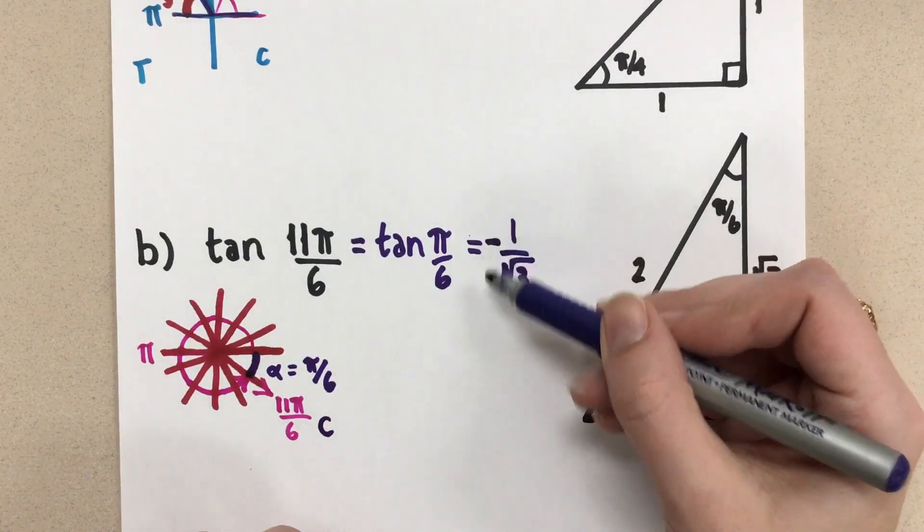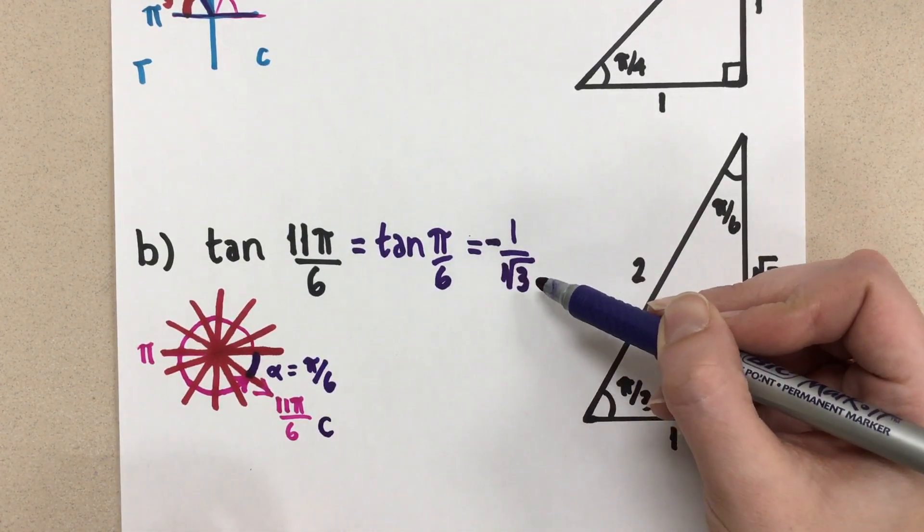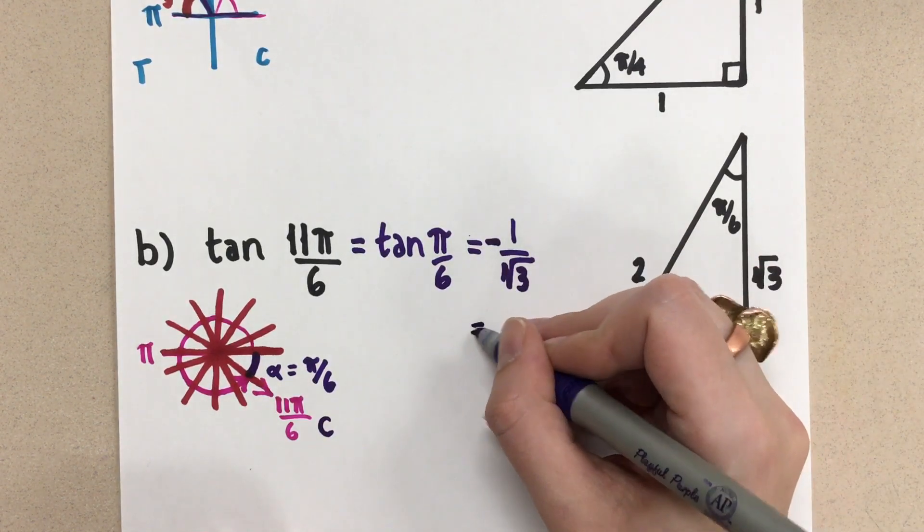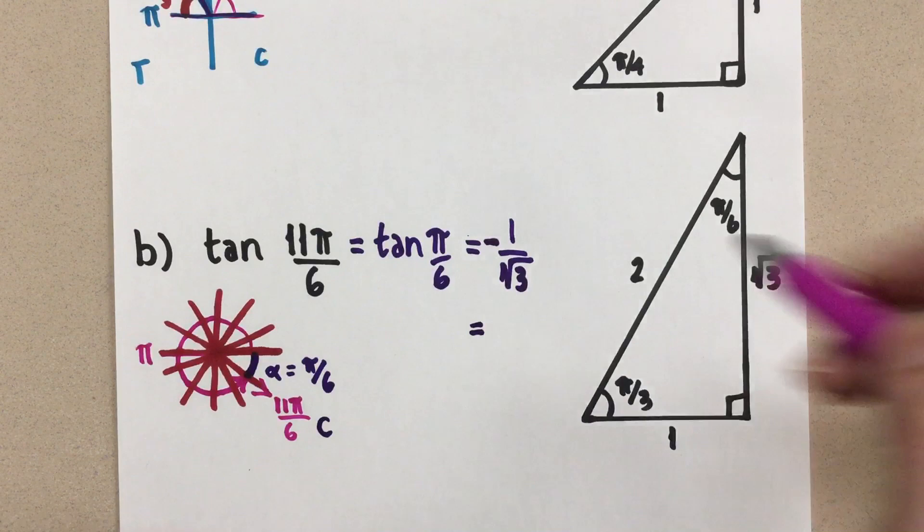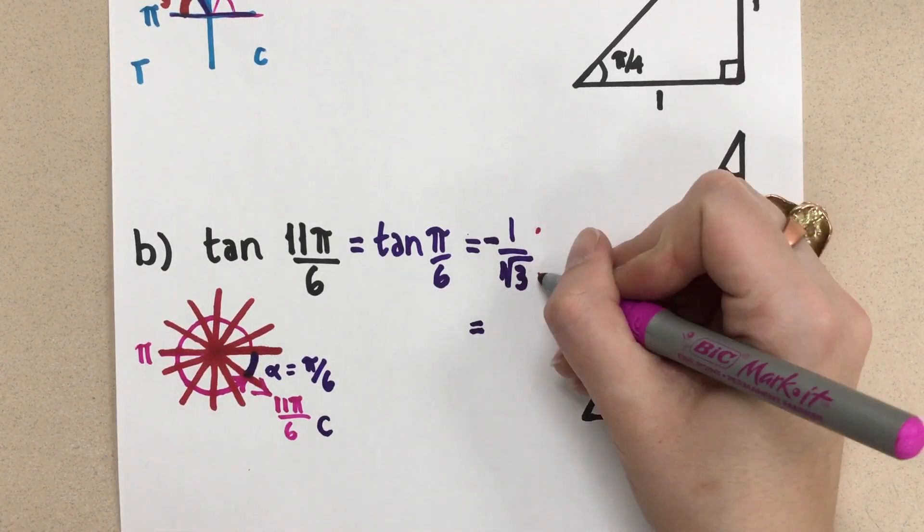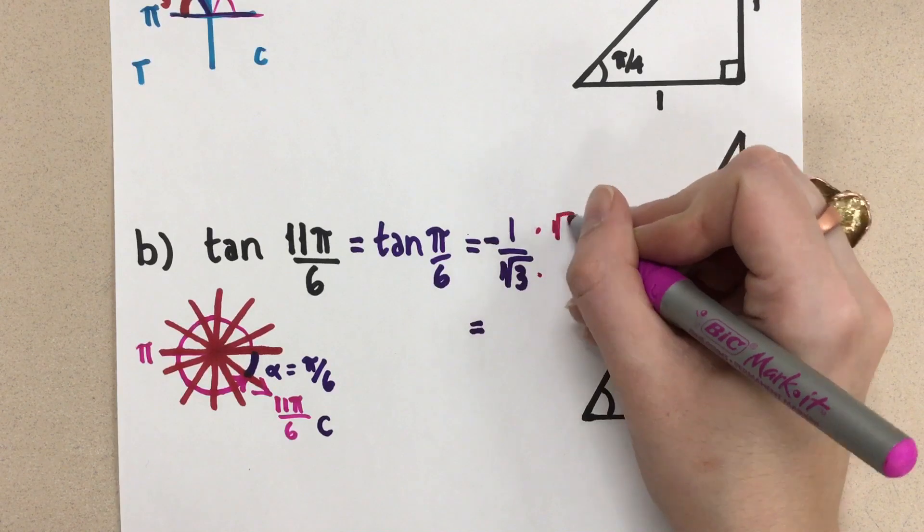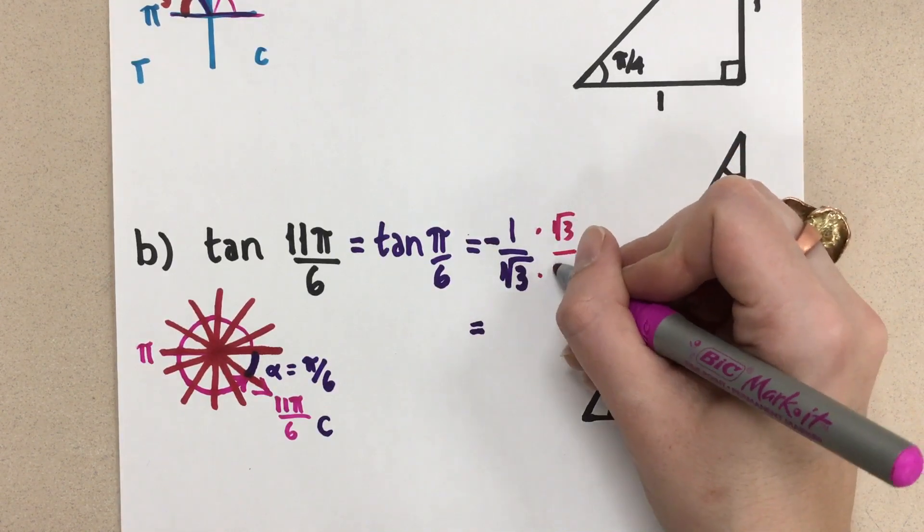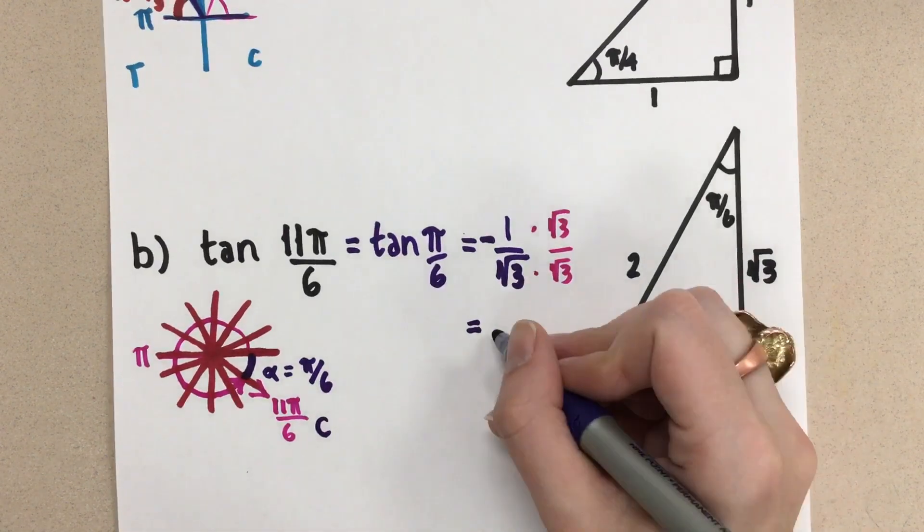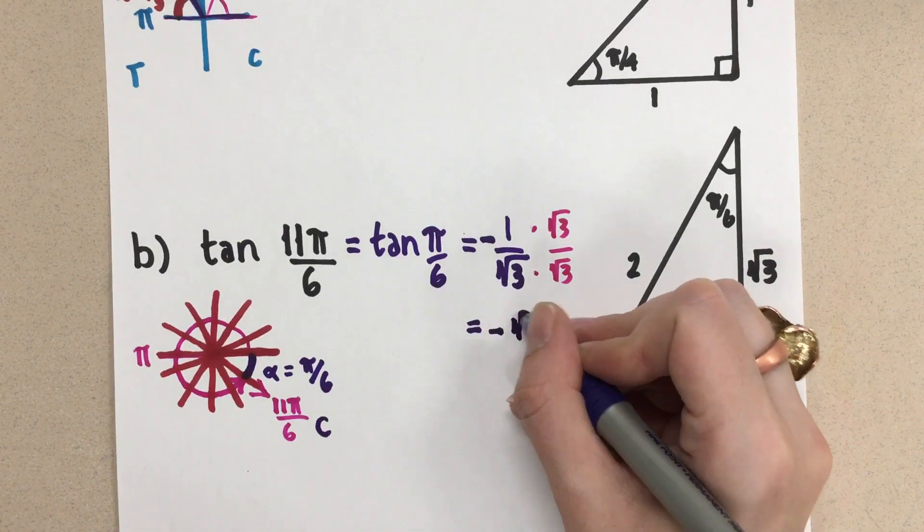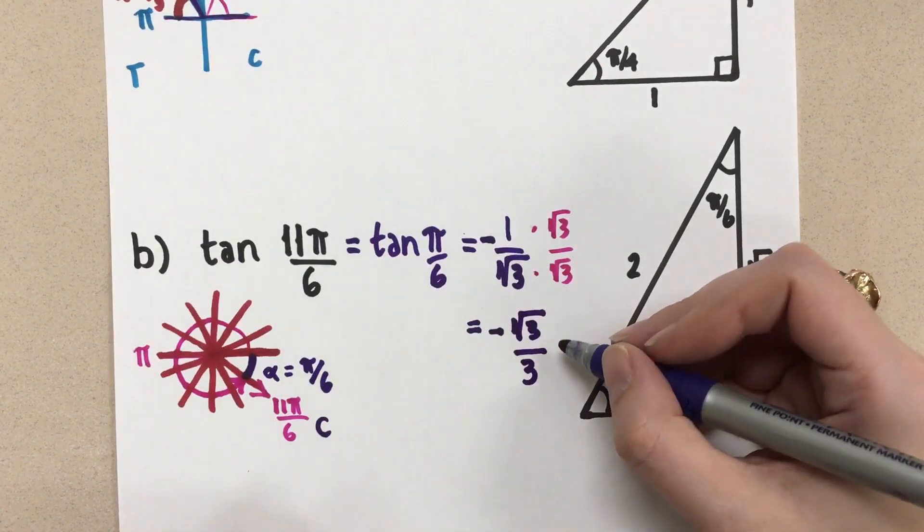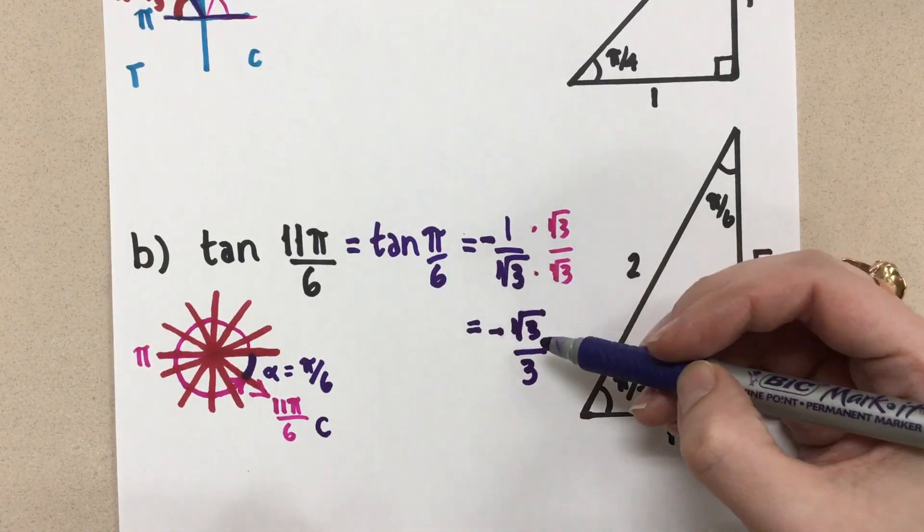Now, we often rationalize this denominator. That means we get rid of that radical. To get rid of a radical in the denominator, we multiply the numerator and the denominator by that radical. So if we multiply by root 3 over root 3, then we end up with the negative root 3 over 3. And so that's the rationalized answer. But these are both the same value.